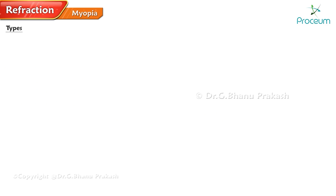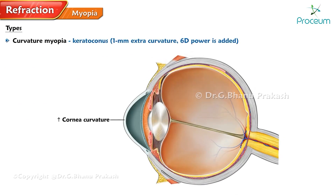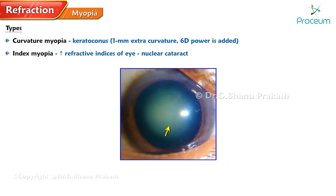Here are some other types of myopia. Curvature myopia is seen with keratoconus — with each 1 mm of extra curvature, 6 diopters of power is added, resulting in increased power of the eye. Index myopia is seen with conditions that increase the refractive indices of the eye, such as a nuclear cataract.